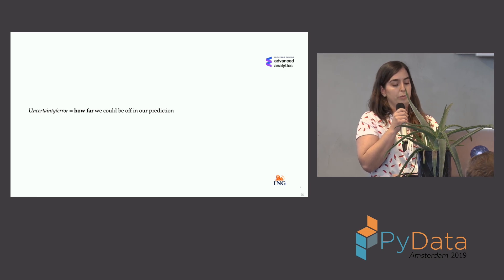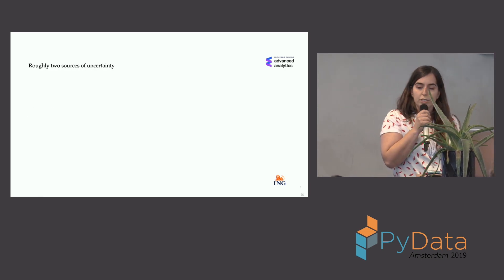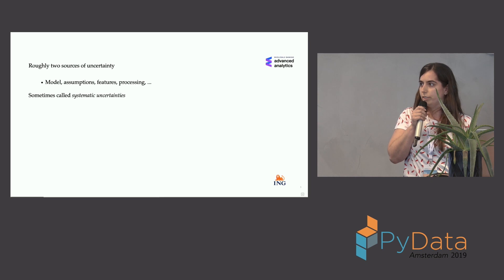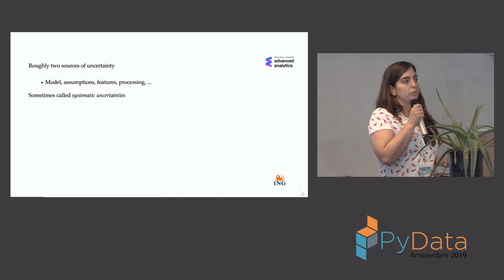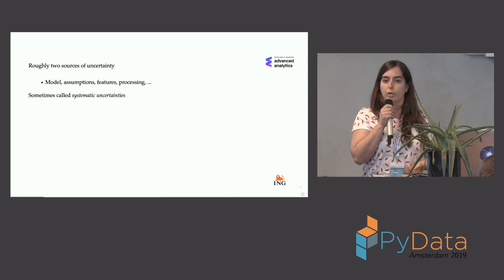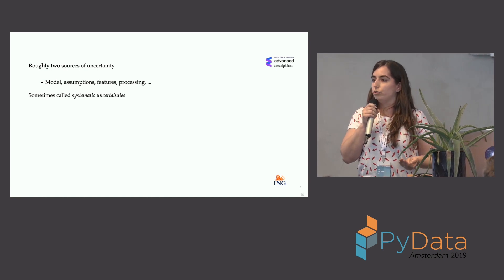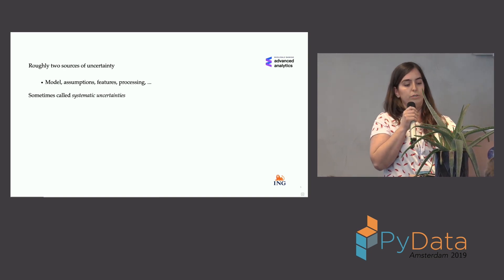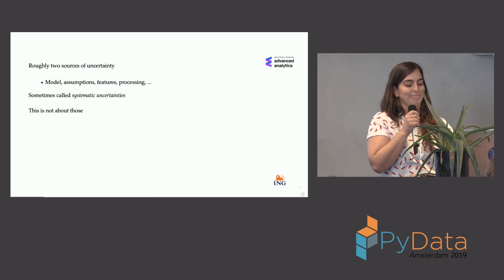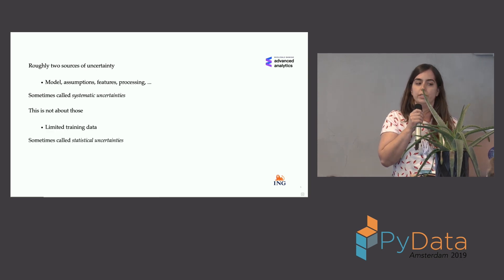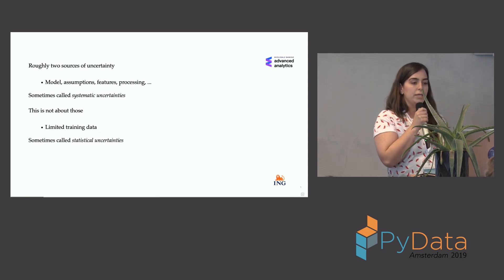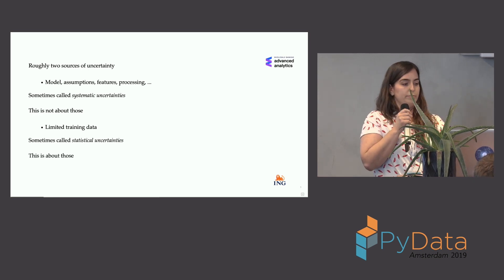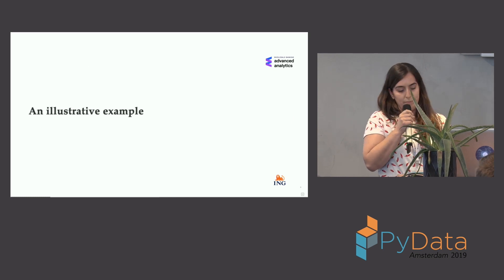So as data scientists we're trying to make models to give predictions, and it's important to realize how far could we be off. There are actually two types of uncertainty. The first one is called systematic uncertainties, related to the type of model you use or missing data. Today I will not talk about those — we'll talk about the second type, statistical uncertainty, which comes from having limited training data.